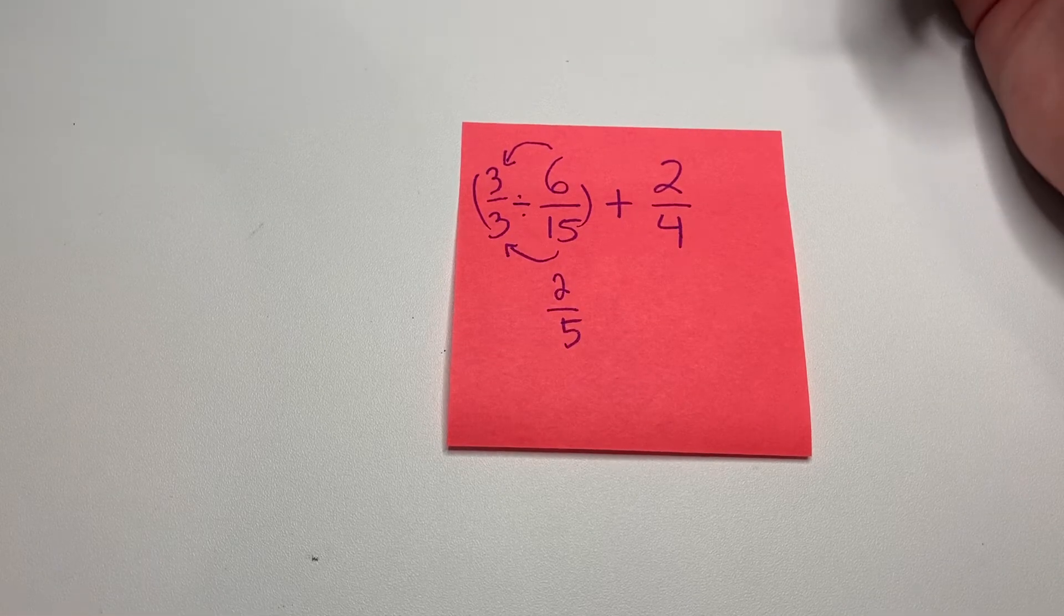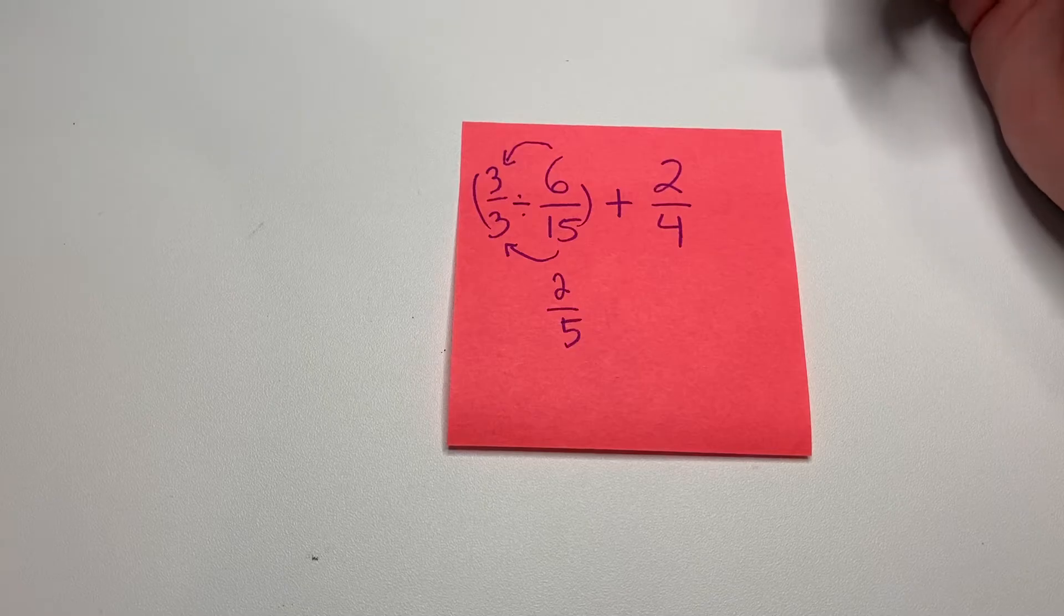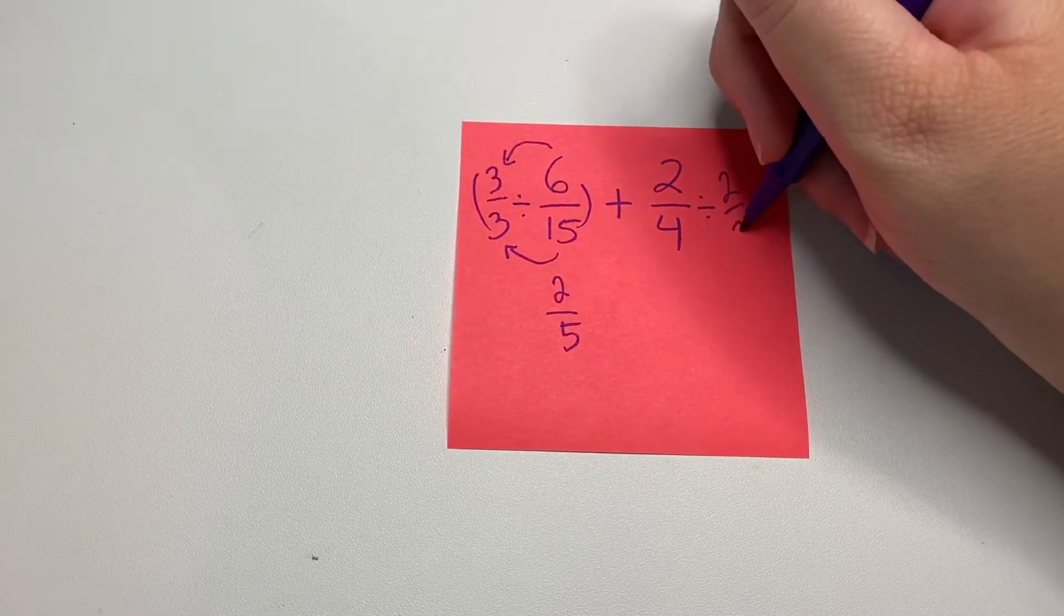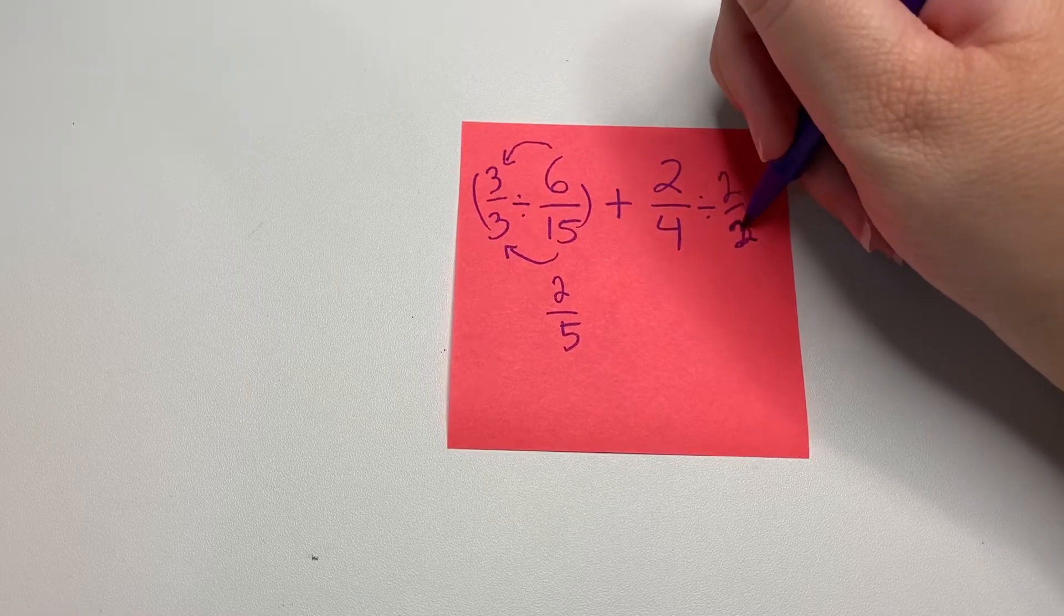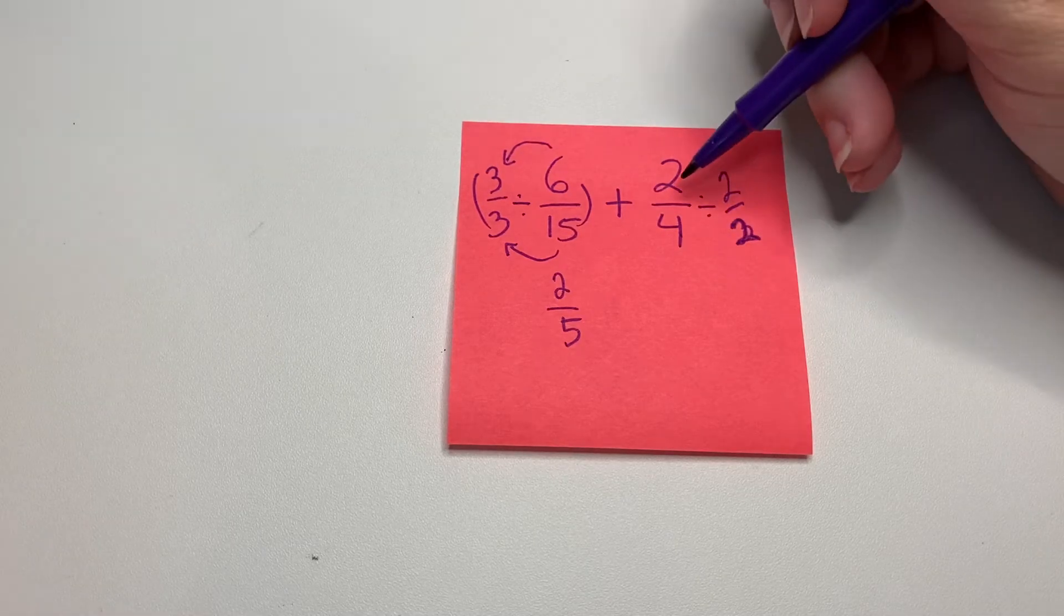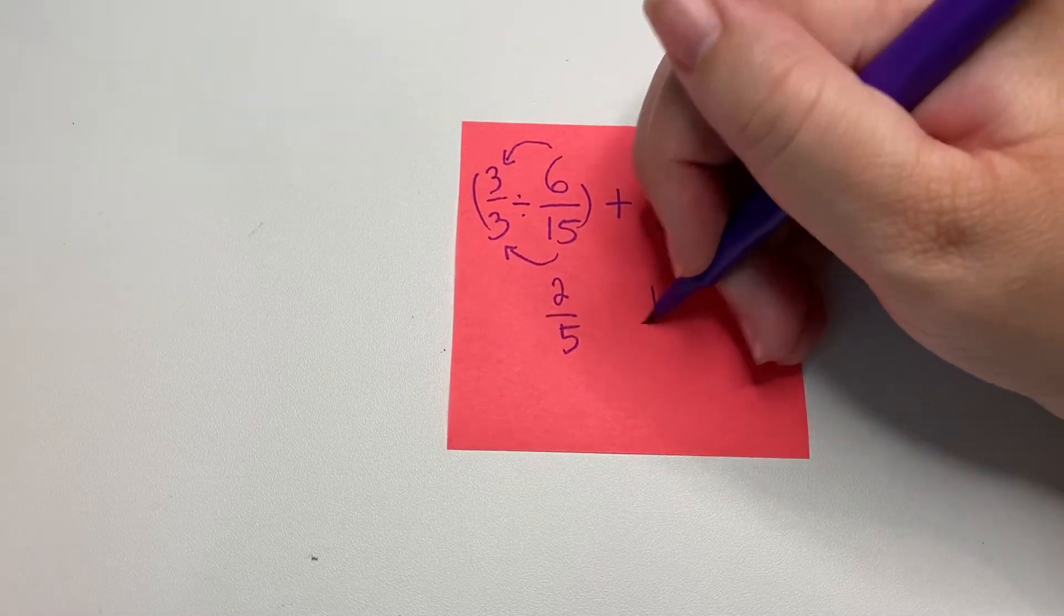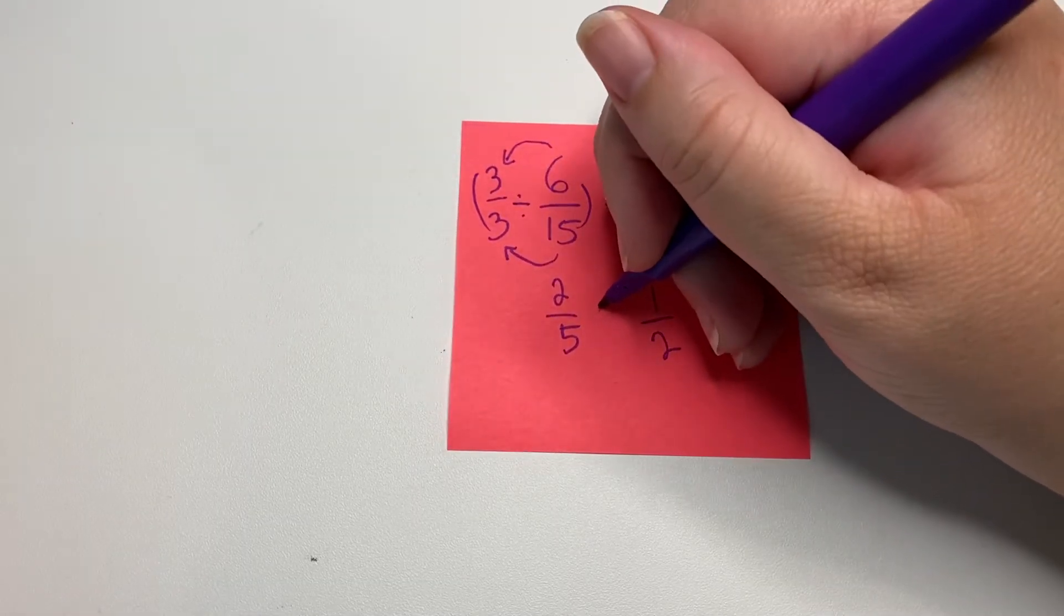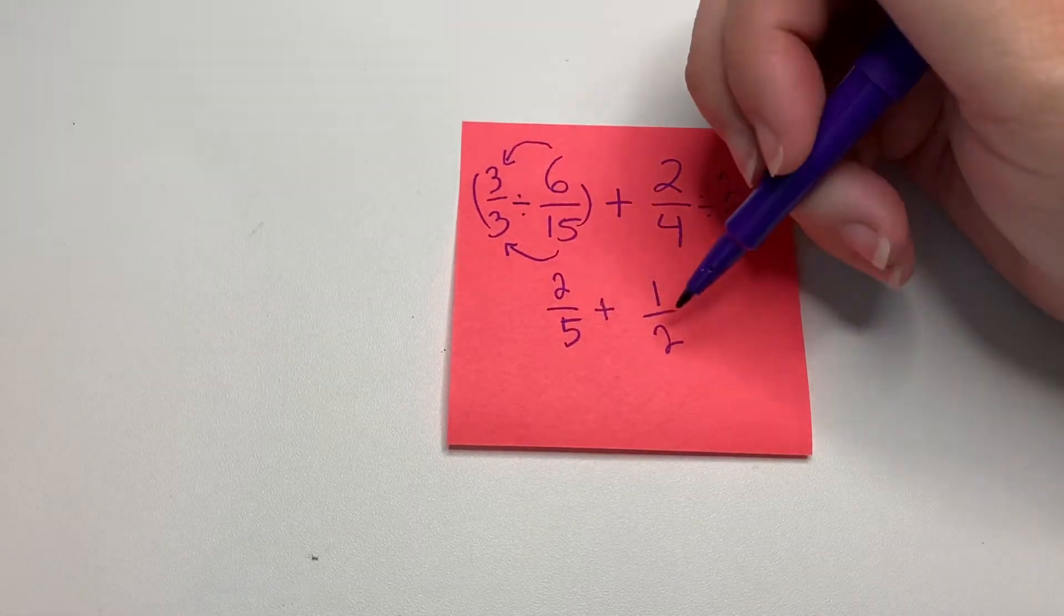That should at some point become familiar to you, that 2/4 is the same as 1/2. But if it doesn't, if it's not—sorry, that's supposed to be a 2—we're going to divide by 2 over 2 because two goes into both of them. 2 divided by 2 is 1, 4 divided by 2 is 2. Now you could go do what we've been doing where you would multiply...